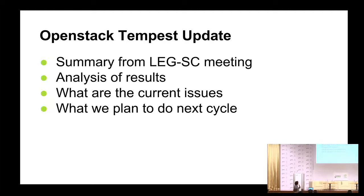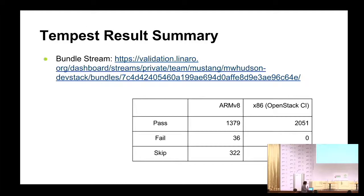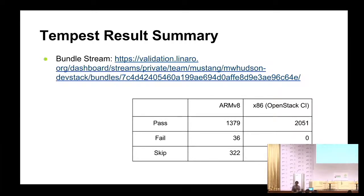Switching back to Tempest: I want to give a quick update from a slide presented to the steering committee by Clark in December — an analysis of the results we see, the current issues with running Tempest, what we plan to do in the next cycle, and how we plan to fix some of the issues. Looking at output from a Lava job run against Icehouse: we have 1,379 passes, so the ratio between passes and failures is pretty good right now — I think we're in good shape. Some of those test failures are related to timeouts, but there's also a large number of skips that we need to look at.